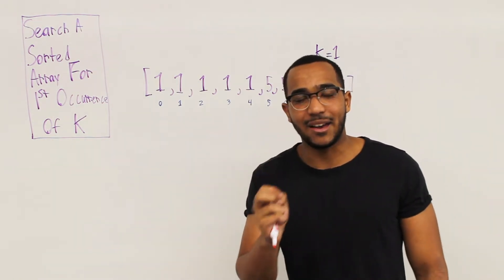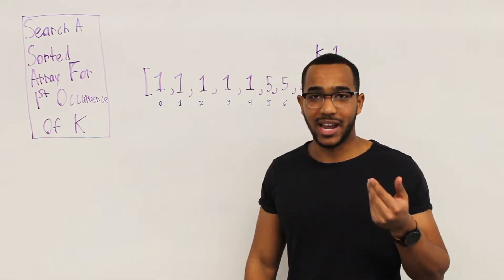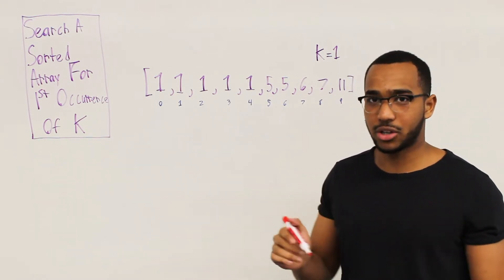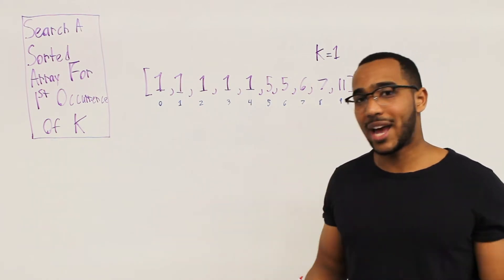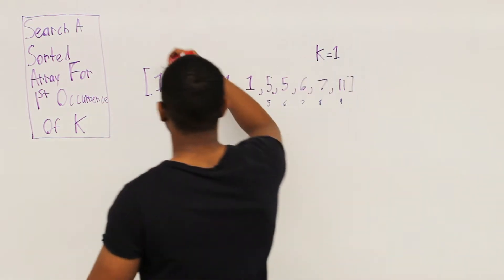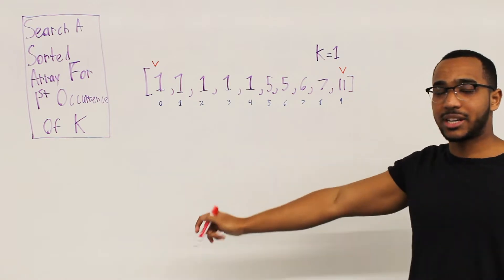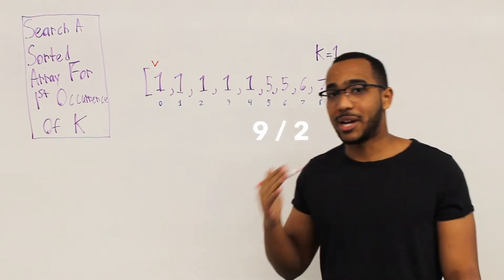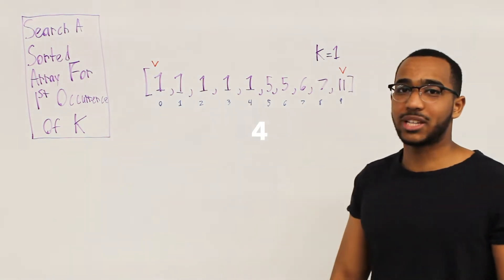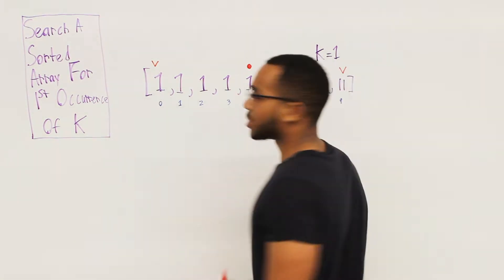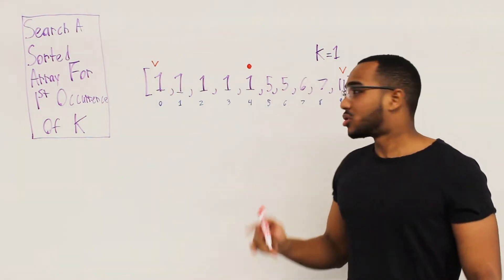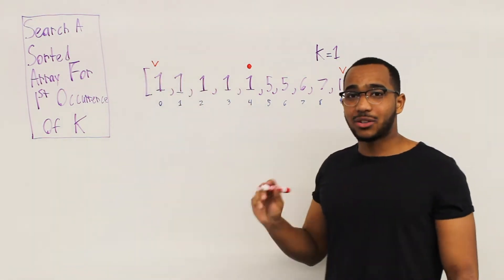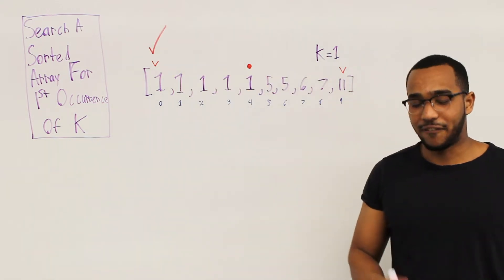Once we find k, what I'm going to do is walk backwards in the array and keep going backwards until I find the first occurrence. We set our bounds as left at index 0 and right at index 9. The middle is 0 plus 9 equals 9, divided by 2 is 4.5, truncated to 4. We've instantly found k at the middle. We walk backwards — 1, 2, 3, 4 steps — and we've found the first occurrence of k.